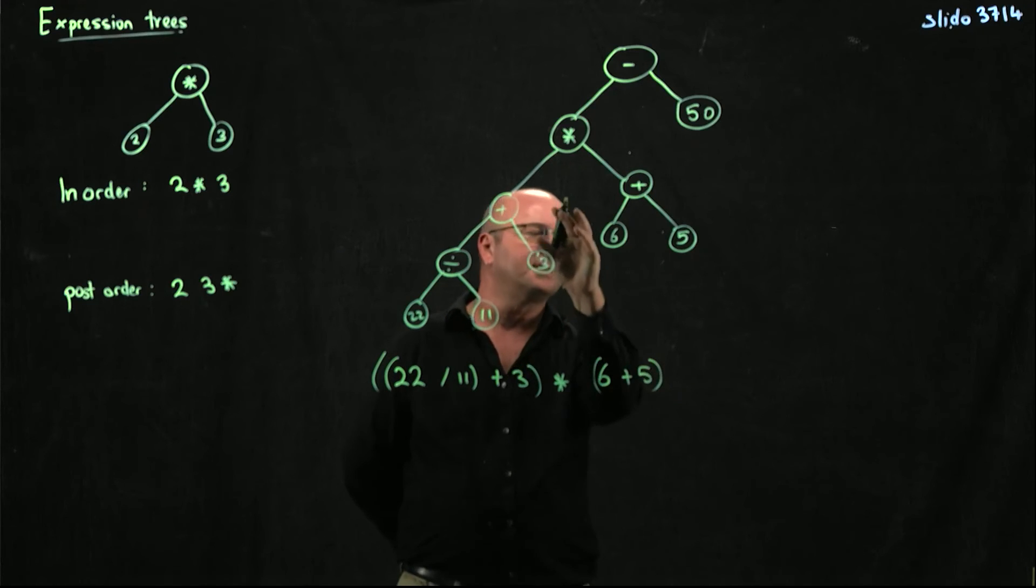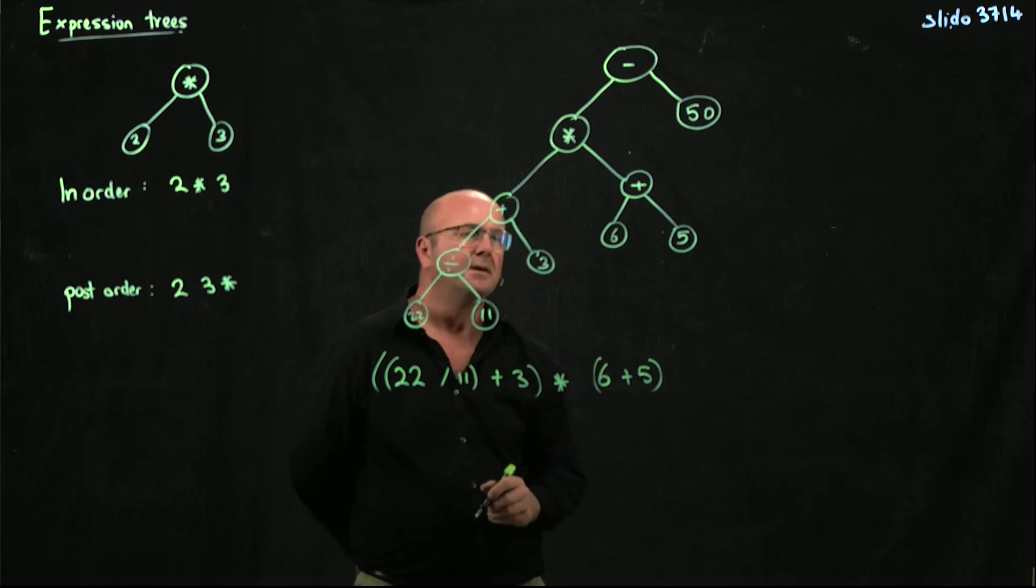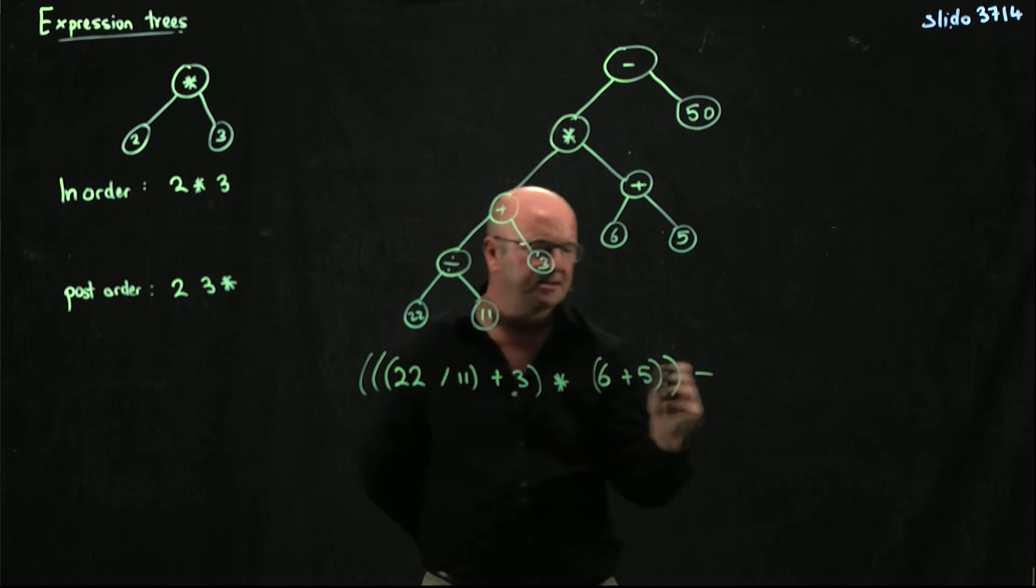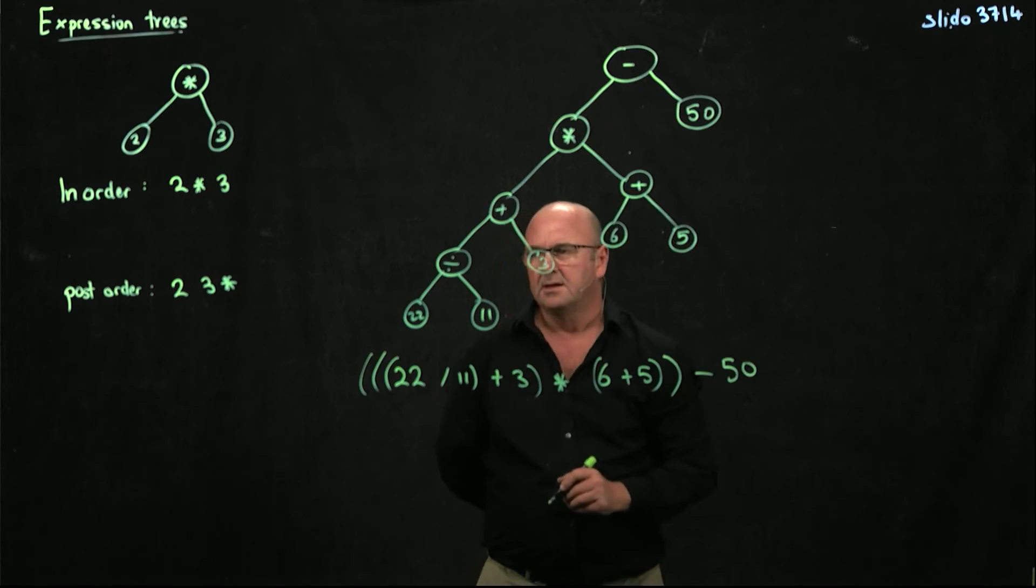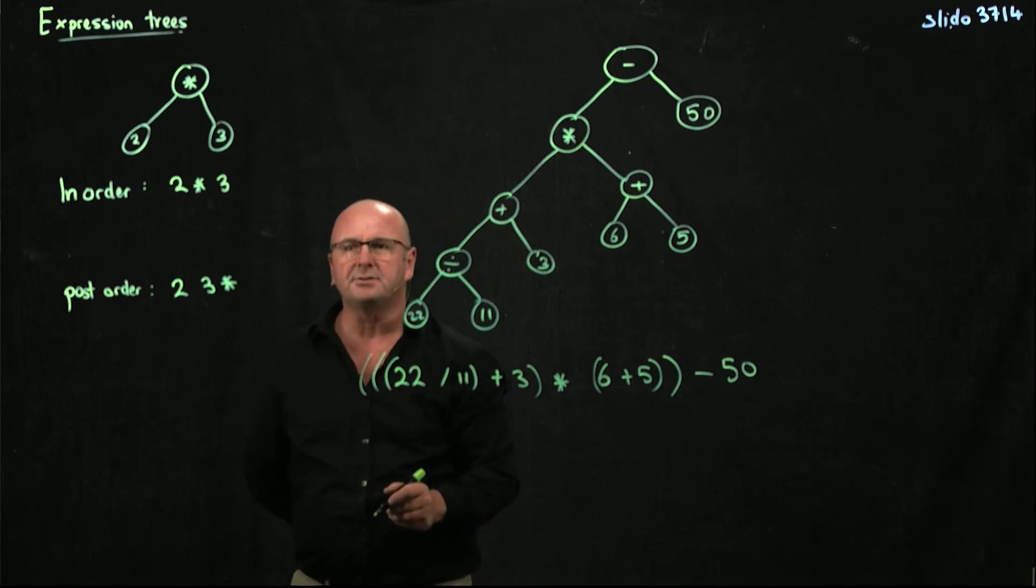And clearly I'm going to multiply that by 6 plus 5. I'm not going to multiply it by 6 and then add 5. And then I'm going to subtract 50. That's my in-order traversal of the tree.